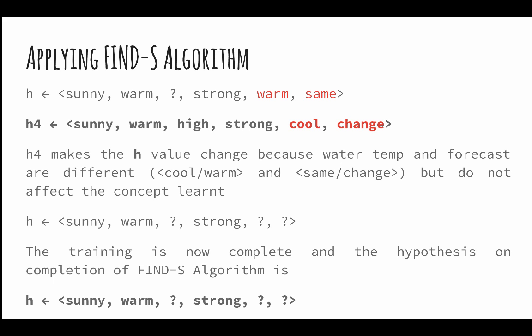The positive hypothesis H4 contains two changes in the attributes of water and forecast which changes from warm to cool and same to change. Both of these attributes are changed to a question mark indicating generalization. At the end of the algorithm's run, we get the max specific hypothesis as a tuple of sunny, warm, question mark, strong, question mark, and question mark. Which means that the reasons for Dave's friend to enjoy water sport is independent of the three attributes: humidity, water, and forecast which are replaced by question marks. This can also be verified from the table that Dave had tabulated before.